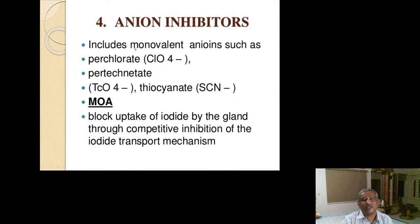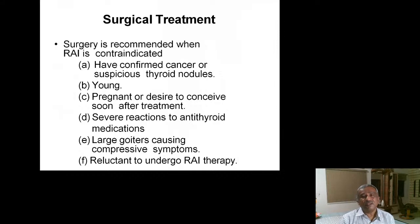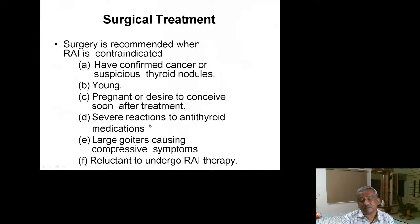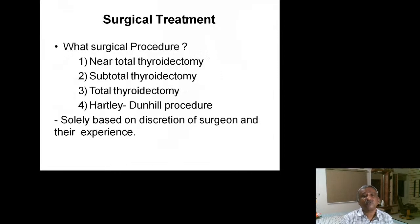Anion inhibitors such as perchlorate, perchinate, and thiocyanate block iodine uptake by competitive inhibition, inhibiting thyroid hormone synthesis. Surgery is recommended when radioiodine is contraindicated — for confirmed or suspicious thyroid cancer, young patients planning pregnancy, severe reaction to antithyroid medications, vasculitis due to methimazole or carbimazole, large goiters causing pressure symptoms such as hoarseness or dysphagia, or patient reluctance to undergo radioiodine therapy. Surgical options include near-total thyroidectomy, subtotal thyroidectomy, and total thyroidectomy.